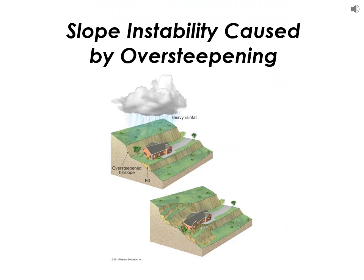Sometimes we get slope failures because slopes get over-steepened, and humans do this a lot when we start building in places with very steep slopes. For instance, if you want to build a house on a hillside that's too steep, you might make a terrace — cutting away the original slope and using that fill to build out the terrace. These can be pretty stable for a long time, but if you have an unusually heavy rainfall event or an earthquake, that over-steepened slope will fail in a rotational slide down at the base, and all that stuff comes tumbling. That's called a slump.